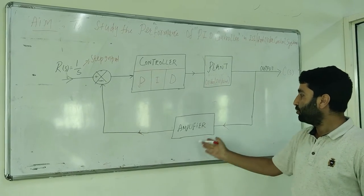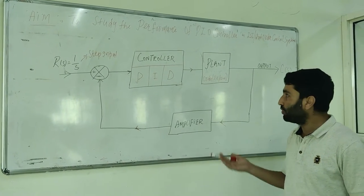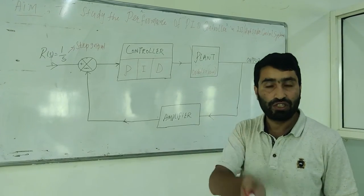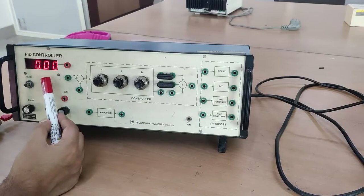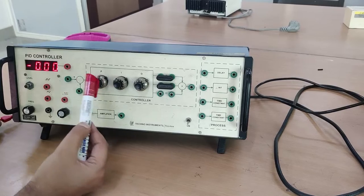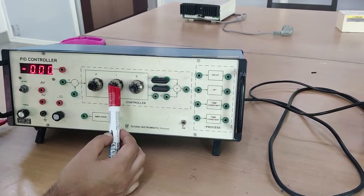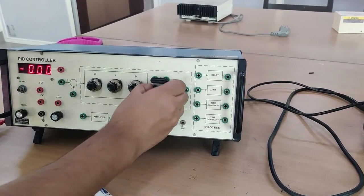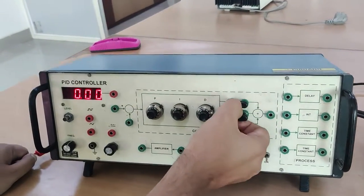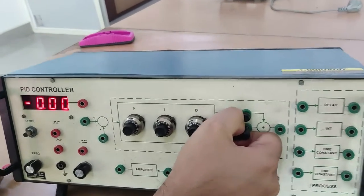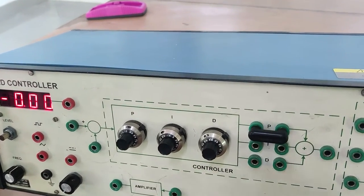We have the feedback here through the amplifier, and we can see how the output looks. Let us demonstrate it on the setup. Here we have the square input. This is the proportional plus integral plus differential controller. I can use either of the three, whichever I need.